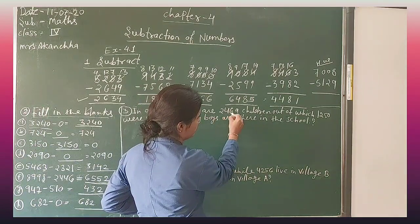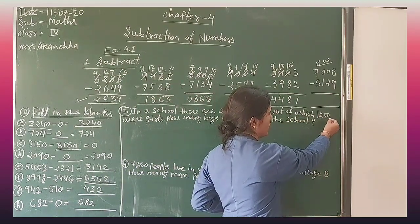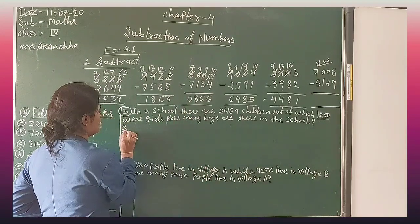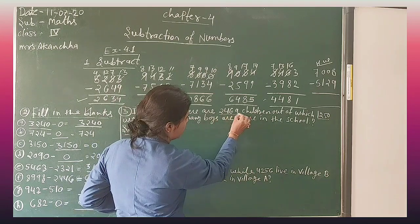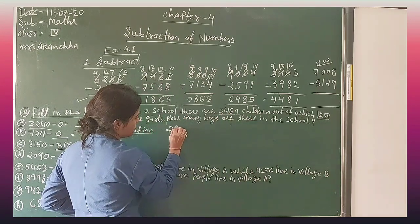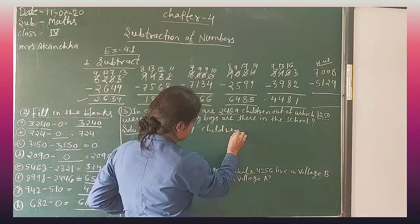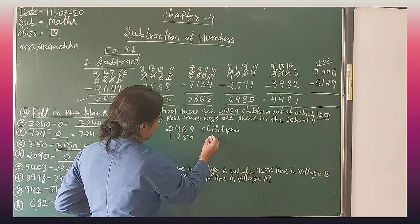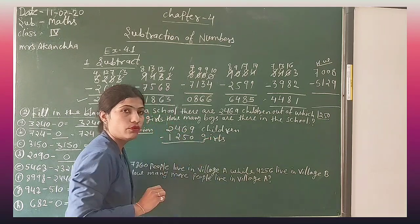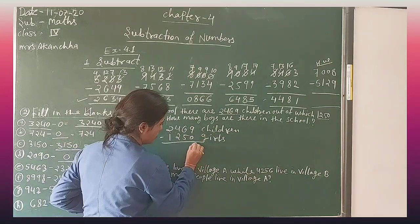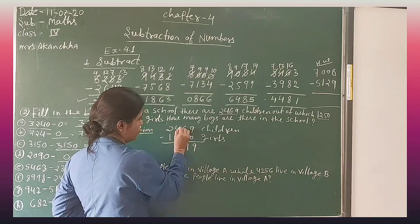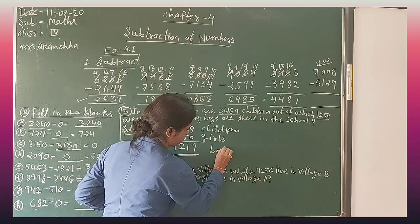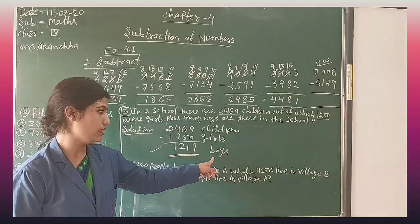Word problem: In a school there are 2469 children, out of which 1250 are girls. How many boys are there in the school? So 2469 minus 1250: 9 minus 0 is 9, 6 minus 5 is 1, 4 minus 2 is 2, and 2 minus 1 is 1. Your answer — number of boys — is 1219.